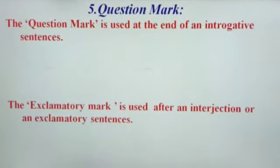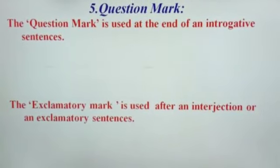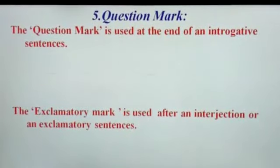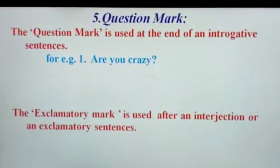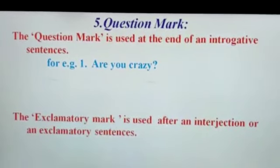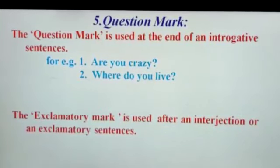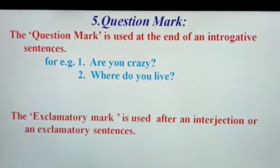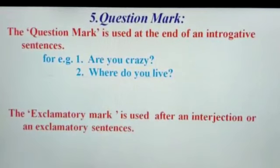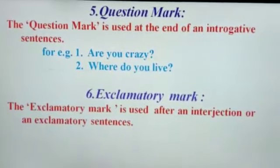Our next punctuation mark is the question mark. The question mark is used at the end of an interrogative sentence. For example, 'Are you crazy?' — this is a yes/no question; after 'crazy' there is a question mark. 'Where do you live?' — this is a WH question; after 'live' there is a question mark.